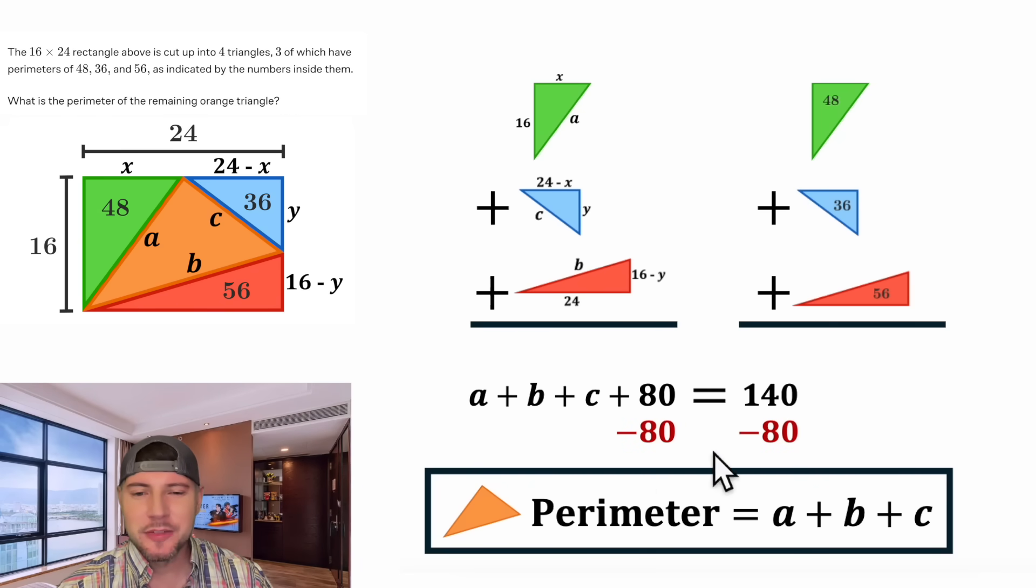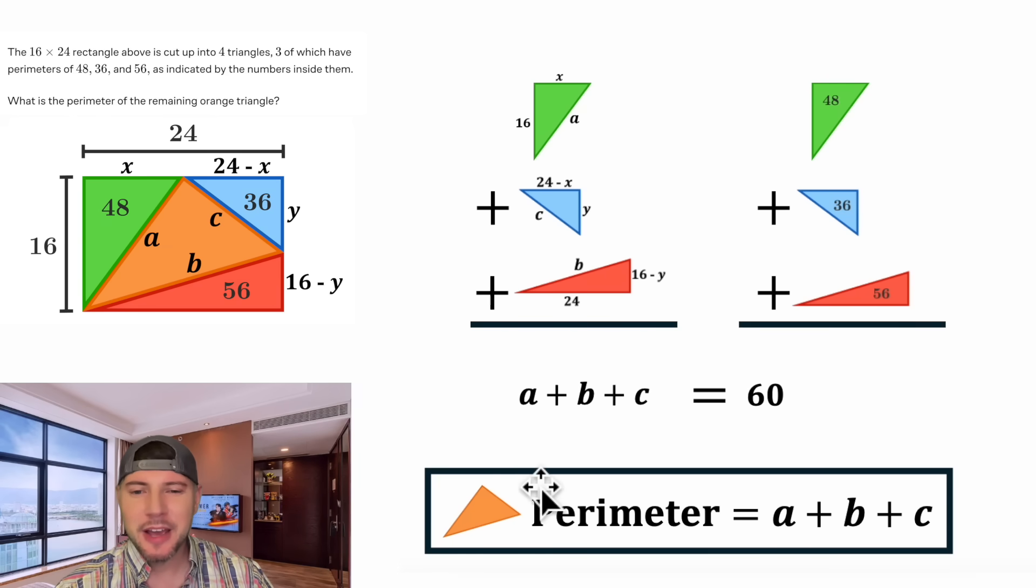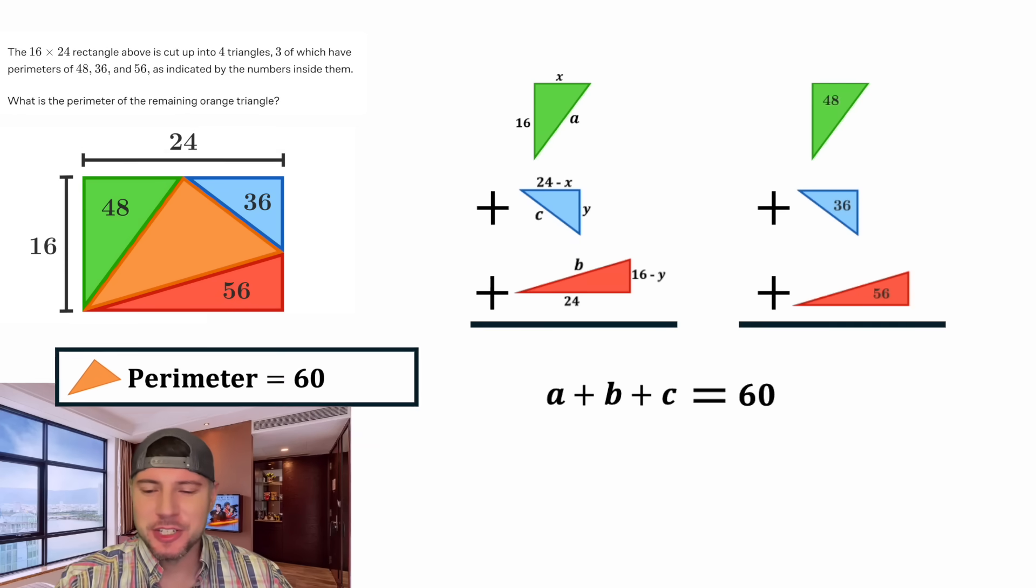From here, we can subtract 80 from both sides. On the left-hand side, we're left with A plus B plus C. And on the right-hand side, 140 minus 80 is 60. And now we have A plus B plus C equals 60. Well, that was what we were trying to solve. The perimeter of our orange triangle is A plus B plus C or 60. And this is the answer to our question.